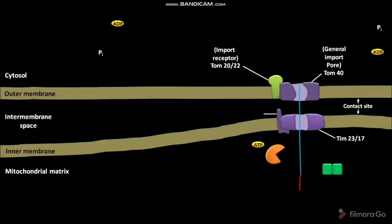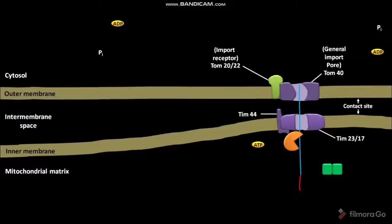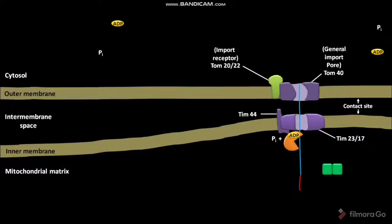The inner mitochondrial membrane also has a transmembrane protein called TIM44. The matrix hsc70 then interacts with TIM44, localizing hsc70 to the TIM23 or TIM17 translocation channel. ATP then binds with the localized hsc70. The interaction of hsc70 with TIM44 stimulates hydrolysis of the bound ATP, forming ADP and Pi, causing hsc70 to undergo a conformational change.